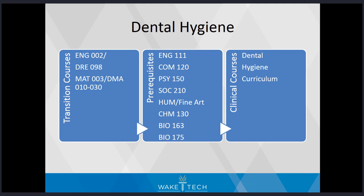For students pursuing dental hygiene, if required, transition courses should be the first priority. Then students can begin taking general education courses toward their prerequisite requirements: English 111, Com 120, Psychology 150, Sociology 210, Humanities Fine Art Elective, Chemistry, Anatomy and Physiology, and Microbiology.